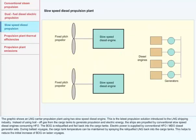Slow Speed Diesel Propulsion Plant: The graphic shows an LNG carrier propulsion plant using two slow speed diesel engines. This is the latest propulsion solution introduced to the LNG shipping industry. Instead of using boil-off gas from the cargo tanks to generate propulsion and electric energy, the ships are propelled by conventional slow speed diesel engines consuming HFO. The BOG is reliquified and fed back into the cargo tanks.